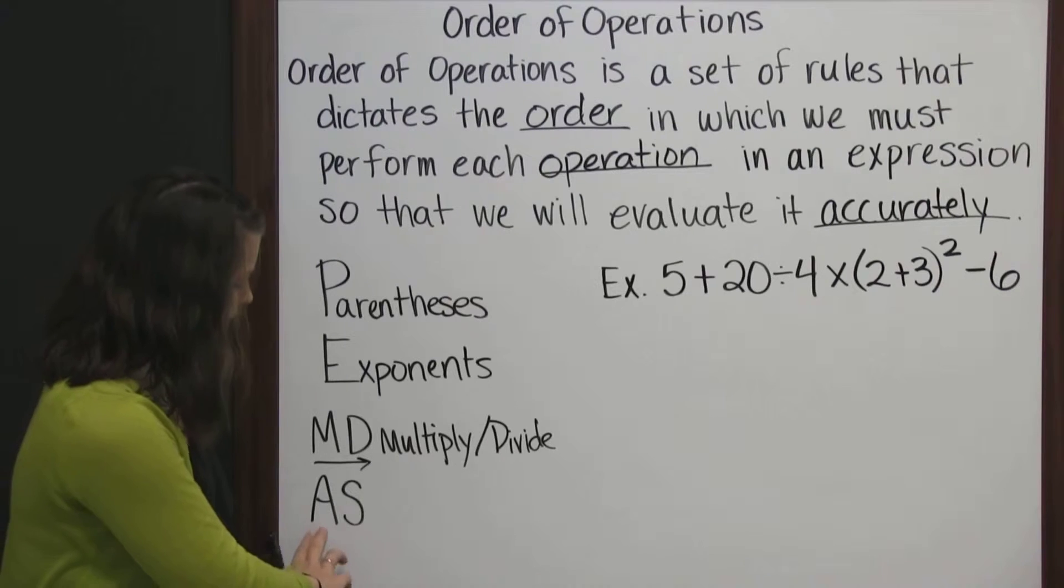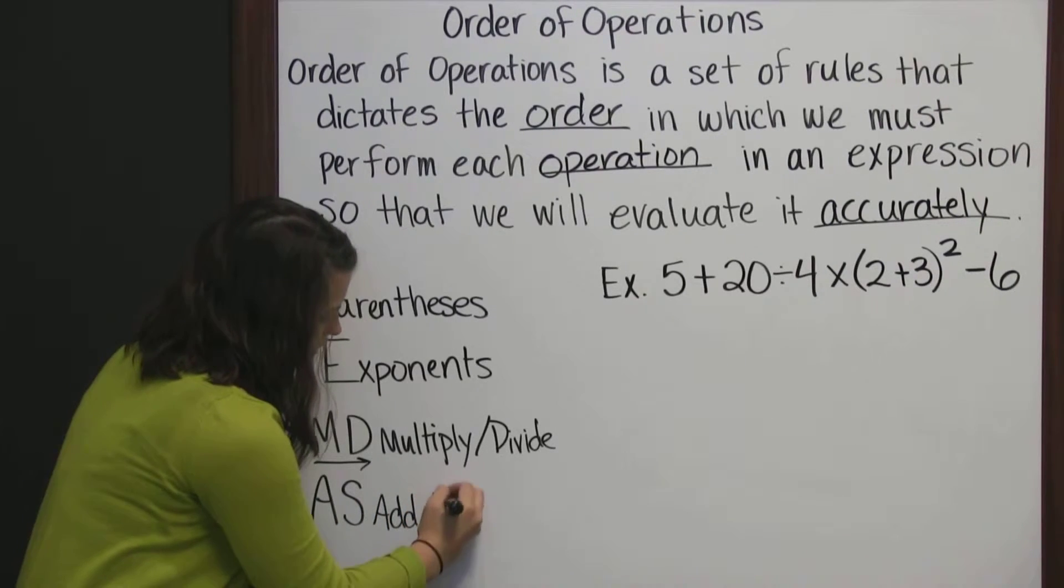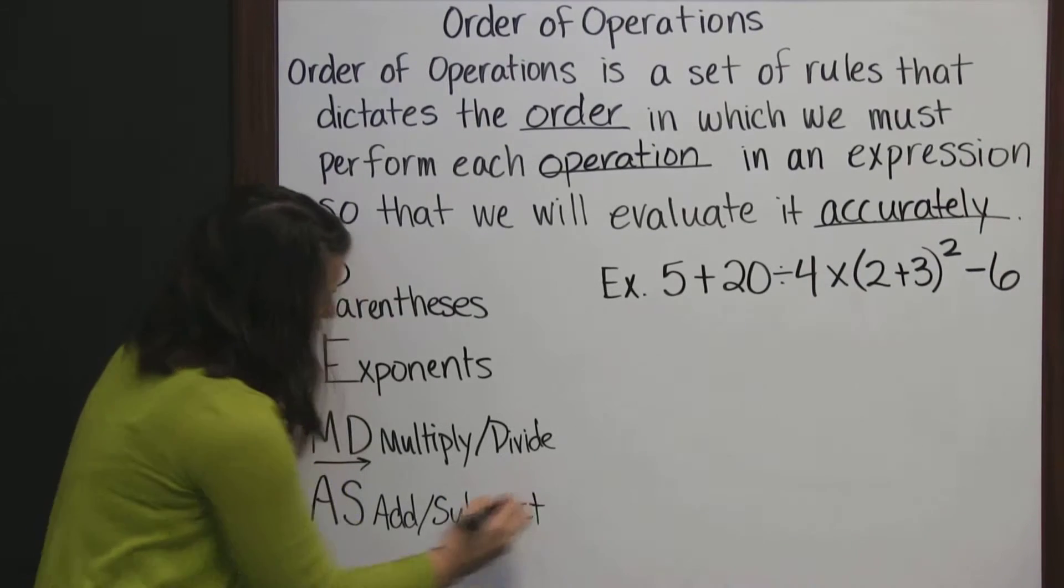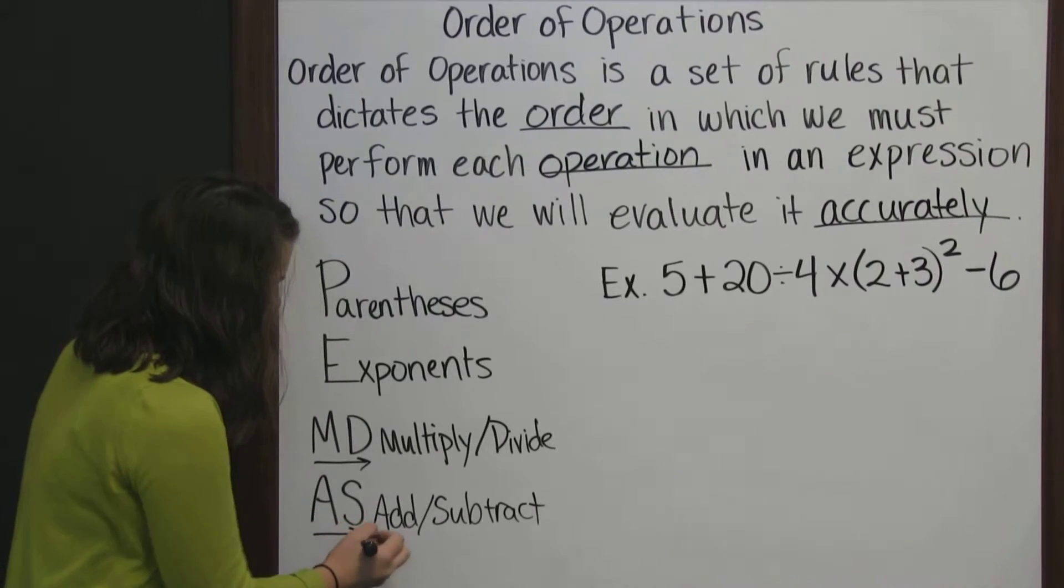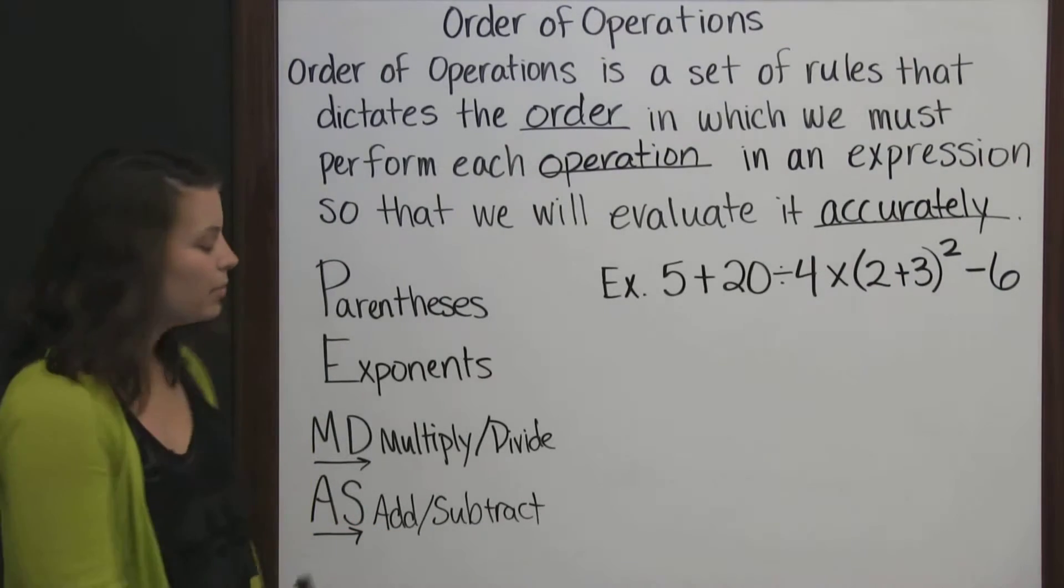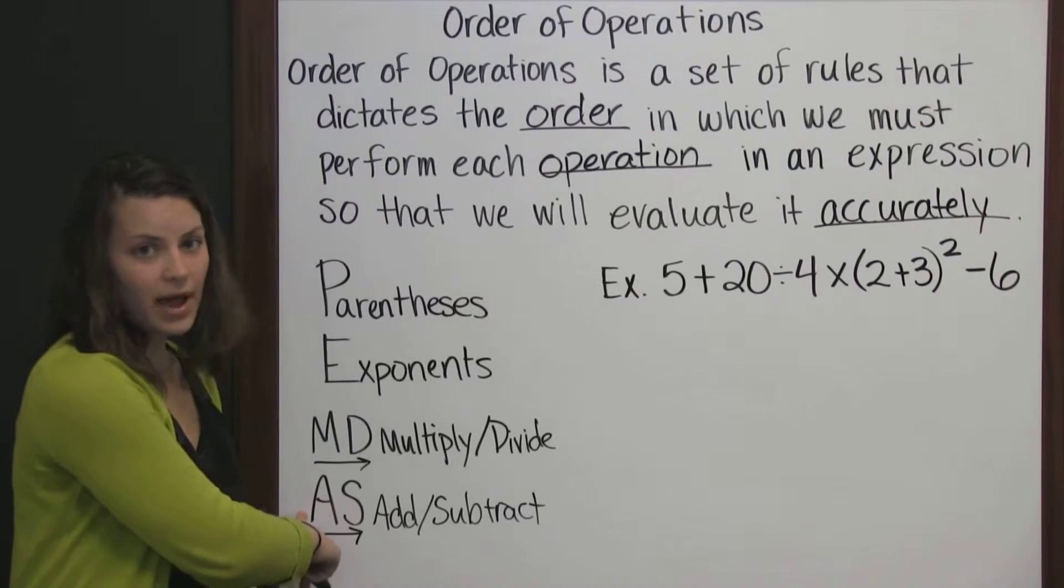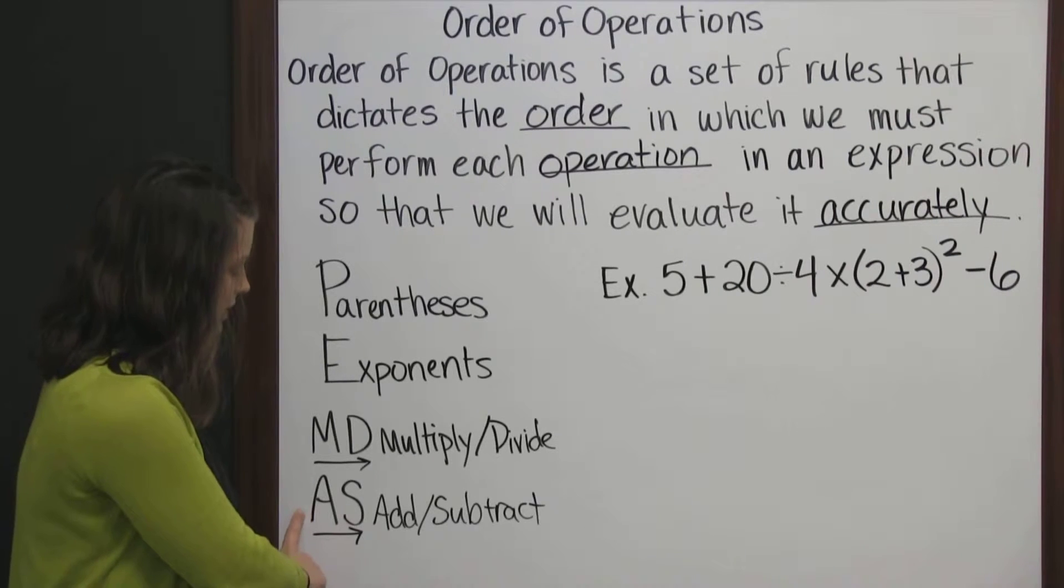And it's the same thing with AS, which stands for addition, subtraction. You won't always add before you subtract. You'll again work those from left to right. But you will always multiply and divide before you add and subtract. So addition and subtraction should be the last things you do.